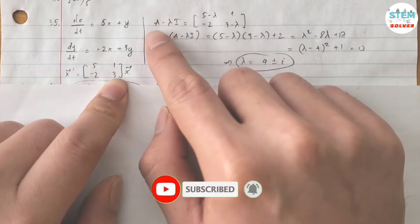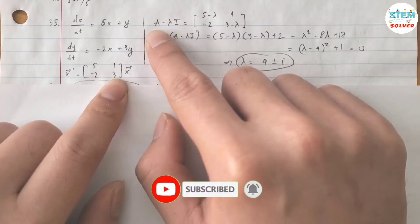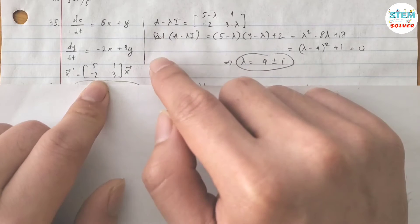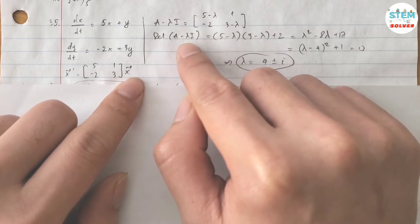Then you are going to find A minus lambda I, where A is this matrix. Subtract with lambda I that gives you this matrix, then find its determinant.